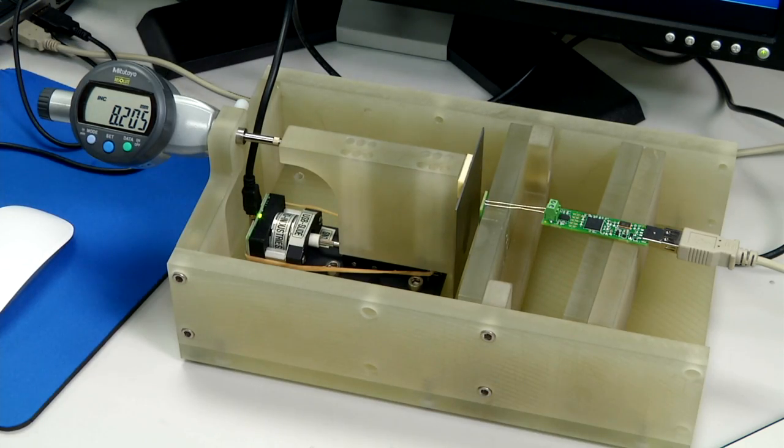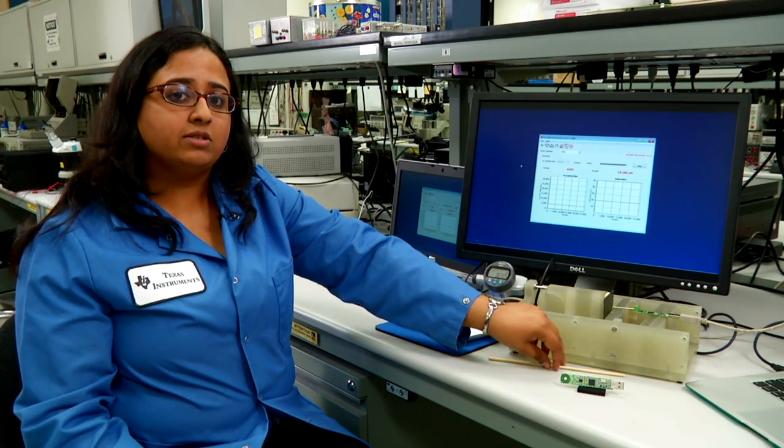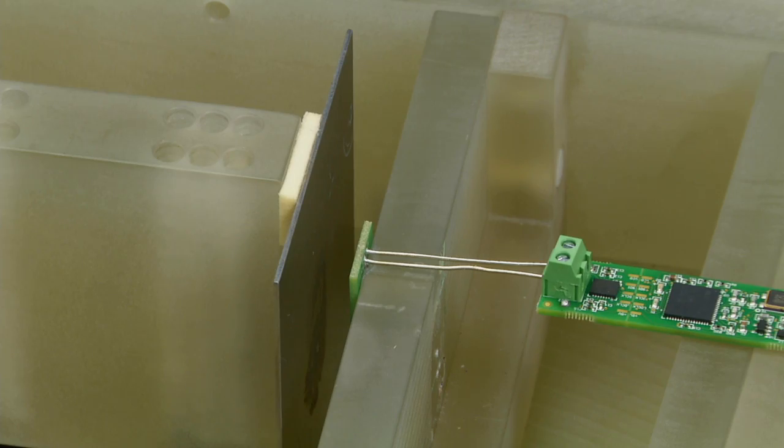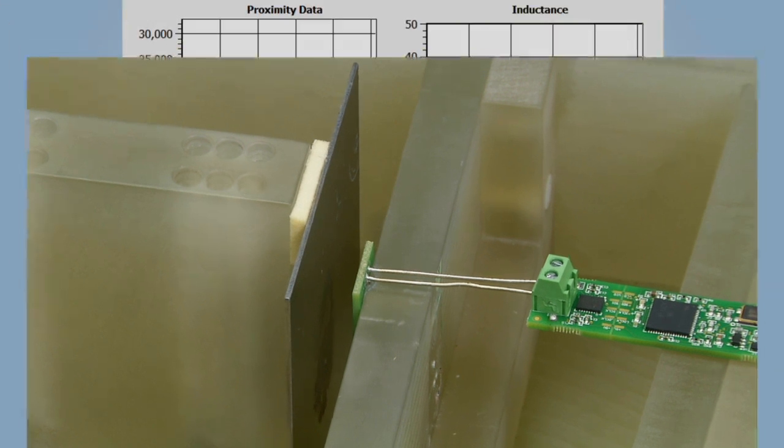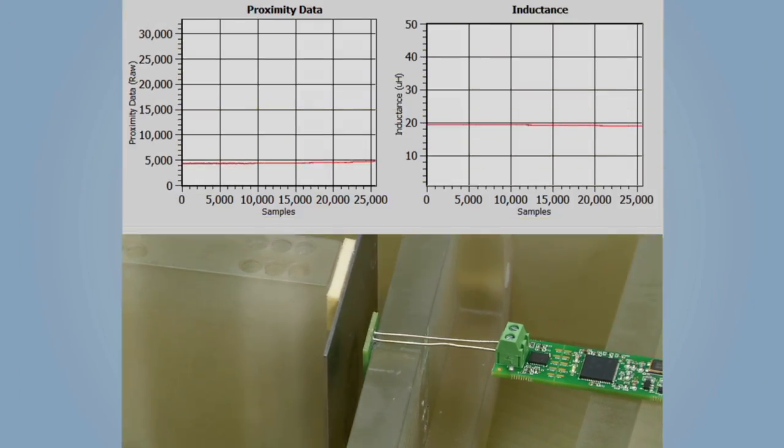The EVM is connected to the GUI and you will see the LDC response on the screen. Once we start the motor and move the target towards the coil, you will see the gradual change in RP as well as in L.